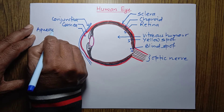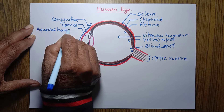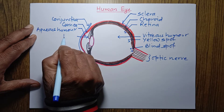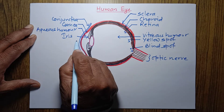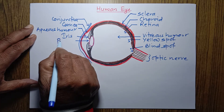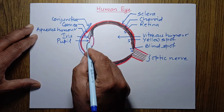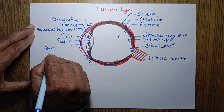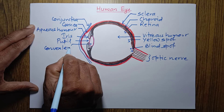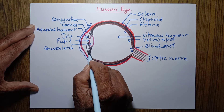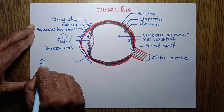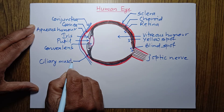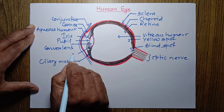And this is iris. And this part is pupil. And this is the convex lens of the eye. And this is ciliary muscle, and these are suspensory ligaments.